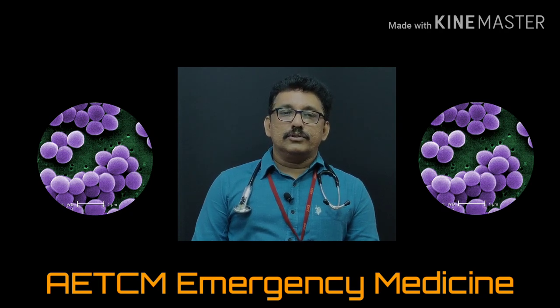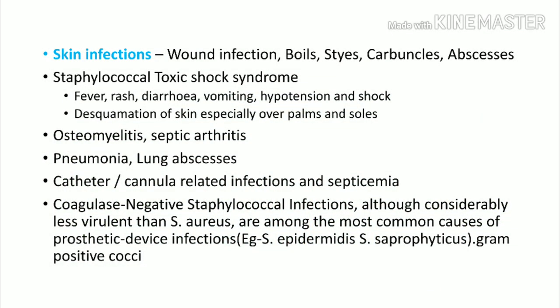Common infections produced by MSSA or MRSA are mainly skin infections. You can have wound infection — for example, somebody coming with a road traffic accident can have wound infection by staphylococcus. In diabetic patients, you can see boils, styes, carbuncles, and abscesses. These things are commonly seen in immunocompromised patients but can occur even in immunocompetent patients. Wound infection is a major problem in clinical practice.